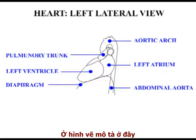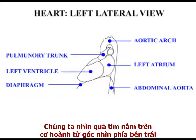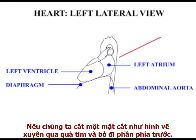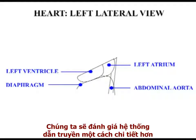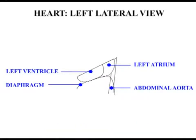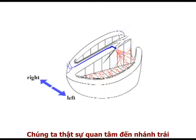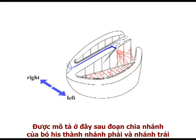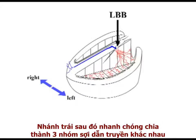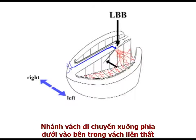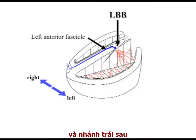In the diagram shown here, we are looking at the heart sitting on the diaphragm from the left. If we take a section through the organ and remove the anterior surface, we can examine the conducting system in the ventricles in more detail. We are particularly interested in the left bundle branch. Shortly after the anatomical bifurcation of the bundle of His into right and left bundle branches, the left bundle branch itself quickly divides into three distinct collections of conducting fibres: a septal branch which travels downwards into the septum, an anterior fascicle, and a posterior fascicle.